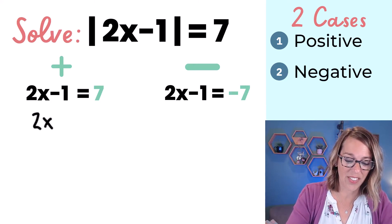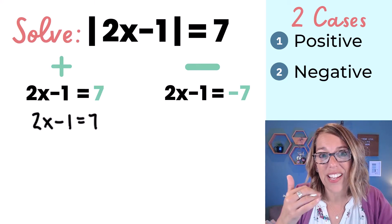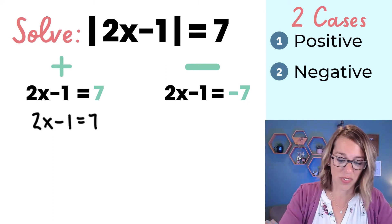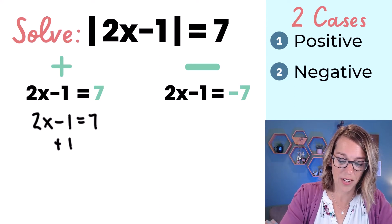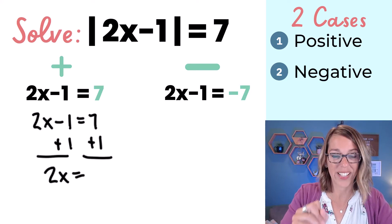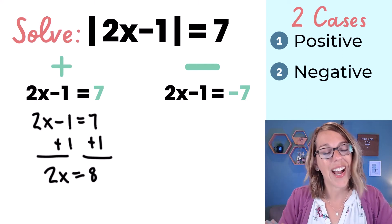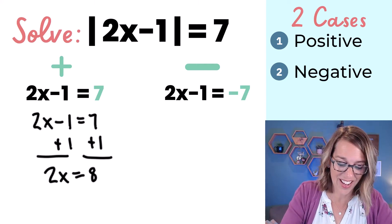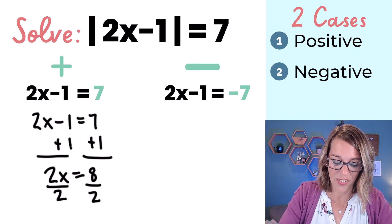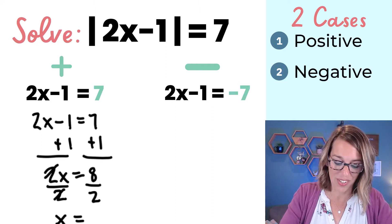For the positive case, 2x minus 1 equals 7. Using multi-step equation tools, I add 1 to both sides to get 2x equals 8, then divide both sides by 2 to get x equals 4.